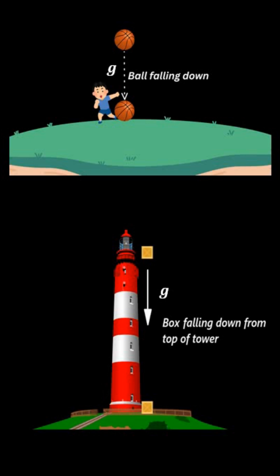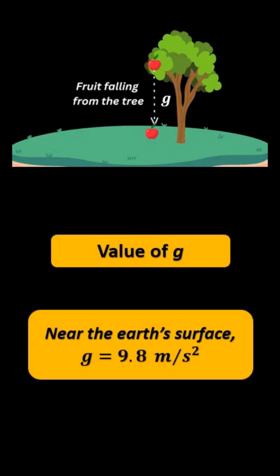The value of small g near the surface of the Earth is 9.8 meter per second square.